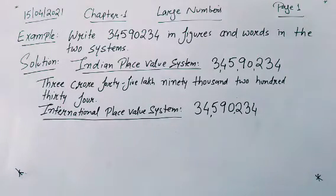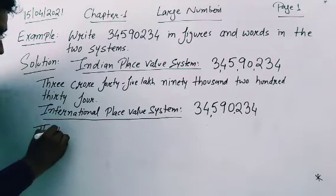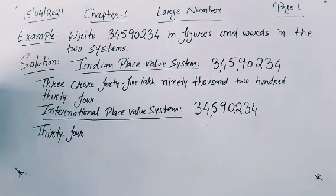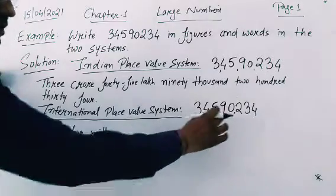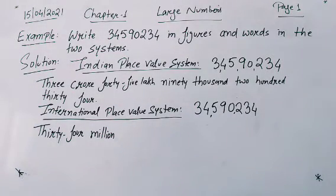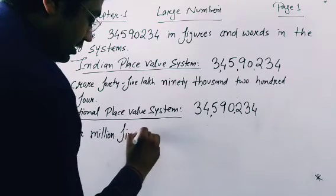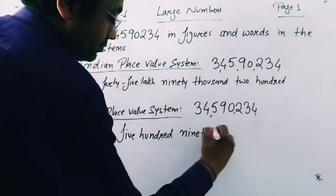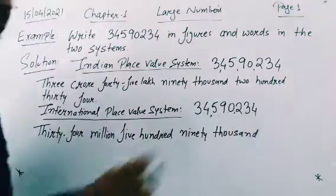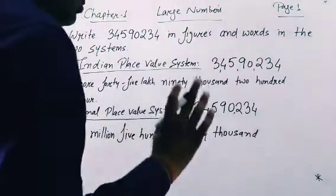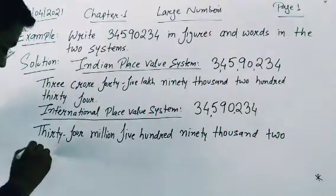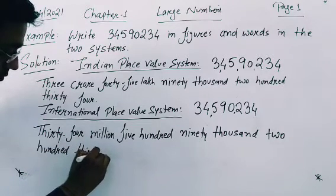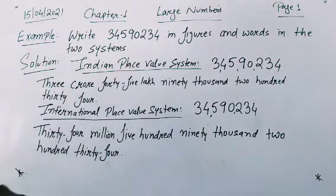So if you want to write it in words: 34 million, then 590,000 — those 3 parts relate to the thousands period as per the international place value system — then the last 3 parts are 234, same as in your Indian place value system. So we follow this method to write numbers in the international place value system.